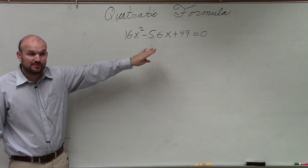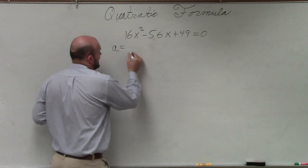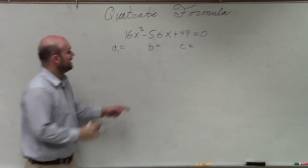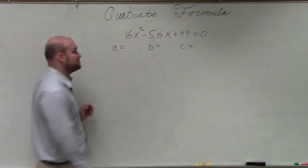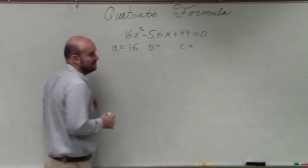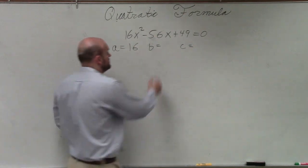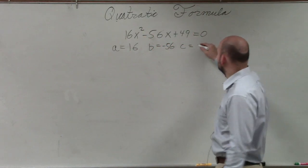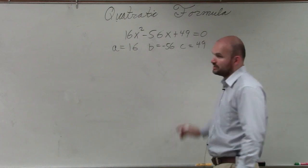I can find out what is a, what is b, and what is c. a is the coefficient of my quadratic term, which is 16. b is the coefficient of my linear term, which is negative 56. And c is the coefficient of my constant, which is 49.